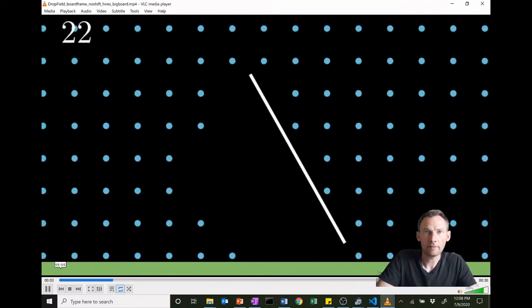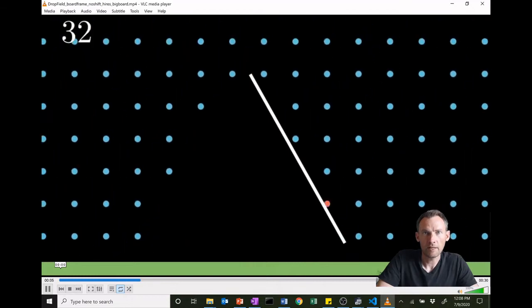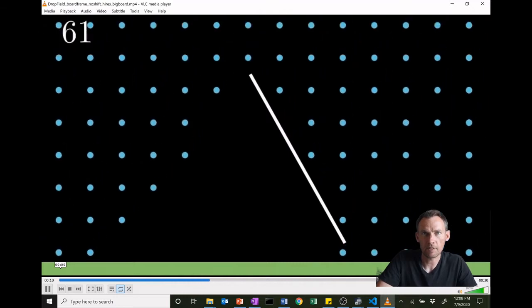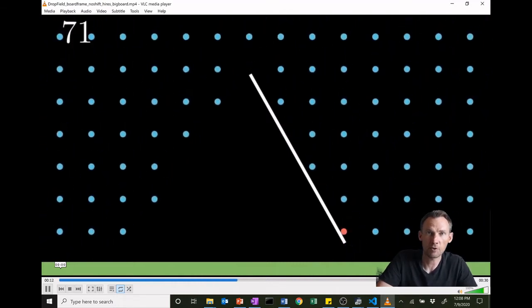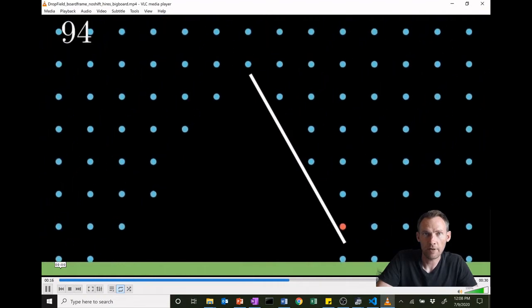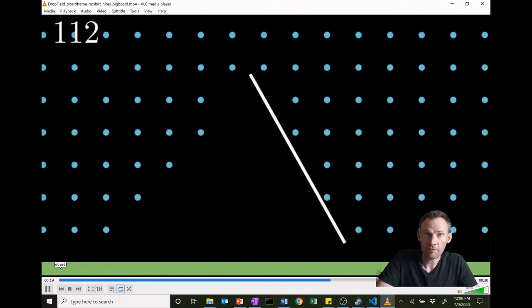Here we are in the reference frame of the board. And you can see the board therefore is stationary. And the raindrops, instead of just falling vertically downwards, are now shifting to the left towards the board. This is what you would see as the runner if you were running through the rain. So we're going to use this reference frame.